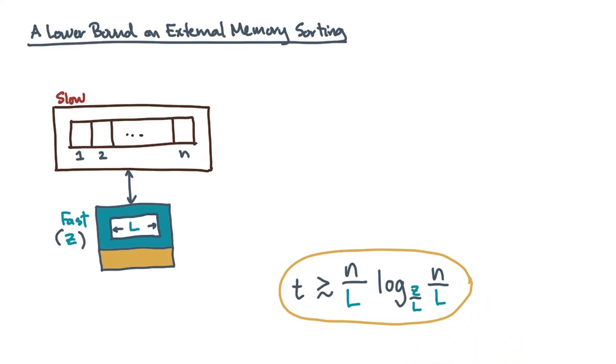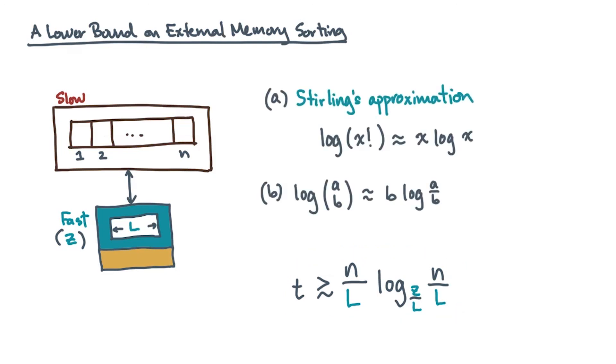To get this result, you just need two common approximation identities plus a little algebra. I'll post a nice set of notes by Lars Arga that explains all this in detail in case you're interested.